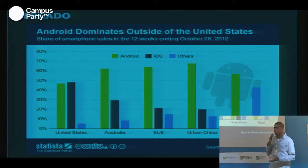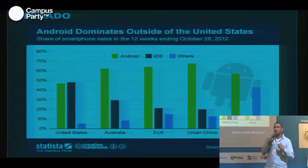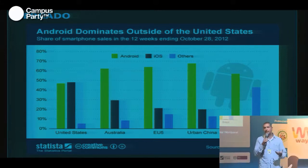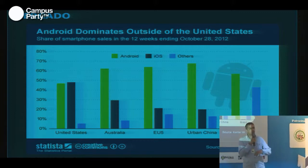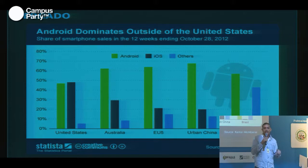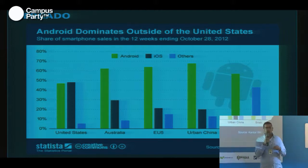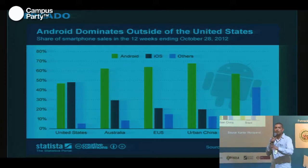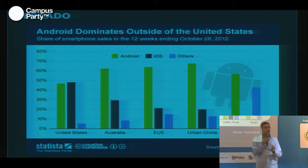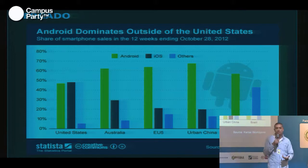Si miramos el caso específico de Estados Unidos, el sistema operativo con mayor cantidad de usuarios es iOS, seguido de Android. La razón por la que miramos Estados Unidos es que la mayoría de personas que consumen y compran aplicaciones están allá. Si yo desarrollo una aplicación solo en español, esa aplicación solamente se podría consumir en Latinoamérica y tendría una muy baja porción de usuarios posibles. Pero si desarrollo un juego en inglés, voy a poder acceder al mercado americano, donde hay una gran base de clientes comprando aplicaciones.